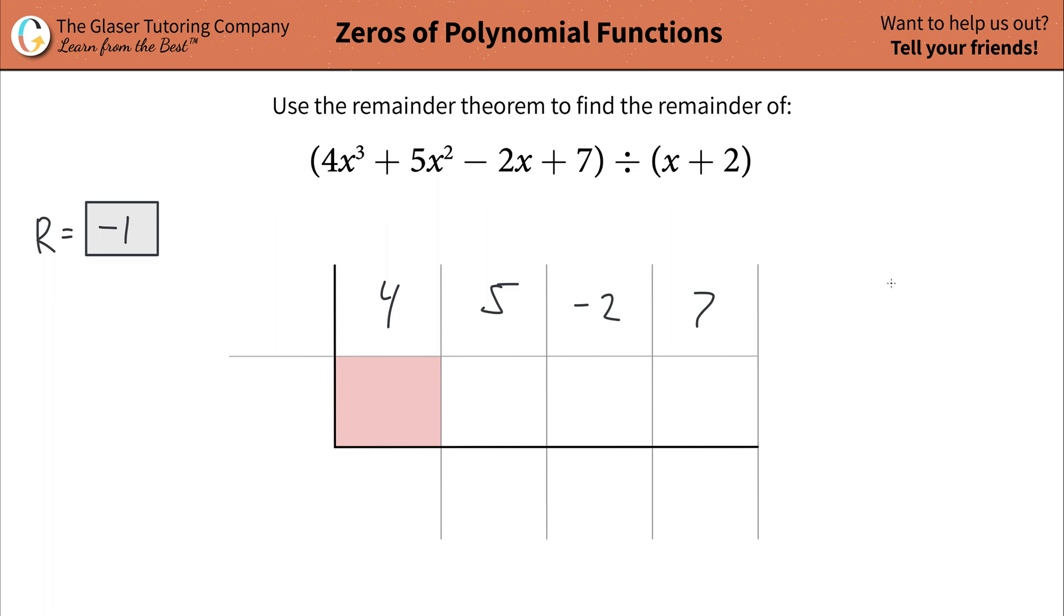So what you're going to do now is you're going to take that divisor, x plus two, set it equal to zero, solve that for x. And basically, that value here, negative two is the value you're going to plug in here, negative two. Notice how that's the same process of finding k. So that's basically k.